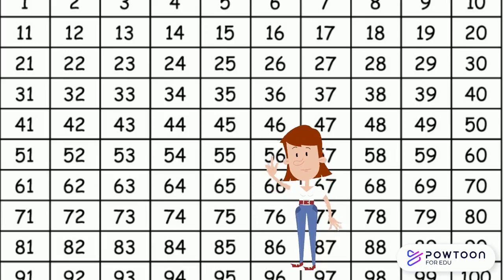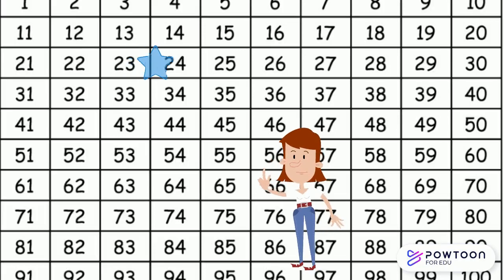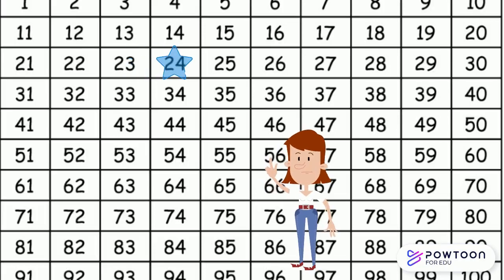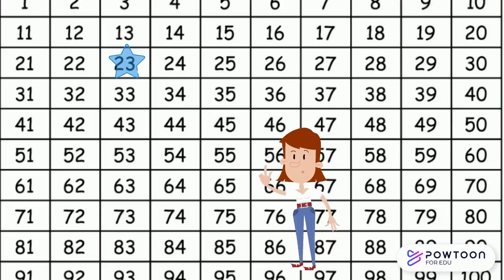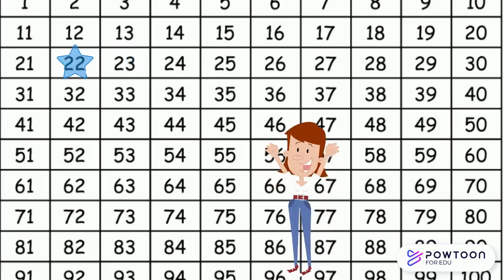For example, if we started at number 23 and added 1, where would this star go? Where would I hop to? That's right — we'd be at 24. Very good. So what if we want to subtract 1? Which direction would we go? What number would we land on? Right again, we'd be at 22. Awesome.